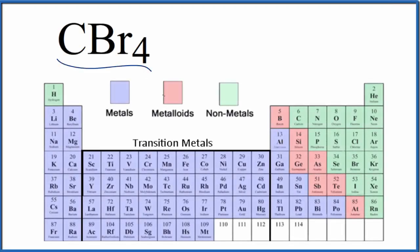To write the name for CBr4, we first need to realize what type of compound we have. Carbon, that's right here, is a nonmetal. Bromine is also a nonmetal.